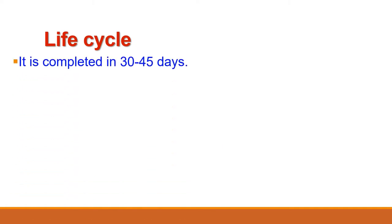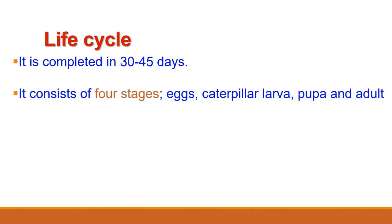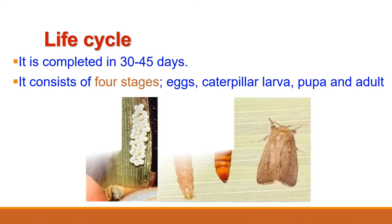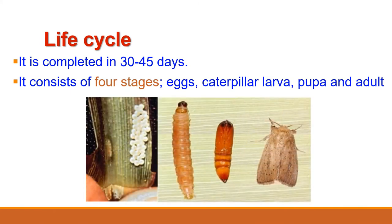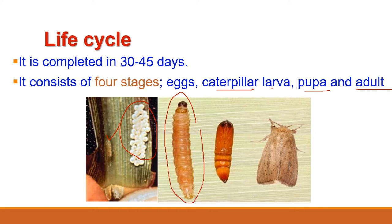The life cycle of Sesamia inferens is completed in 30 to 45 days and it has four stages: first is egg, then larva which is caterpillar larva, third is pupa, and fourth is adult. In this slide you can see the eggs of the pest, the caterpillar larva, the pupa, and the adult insect.